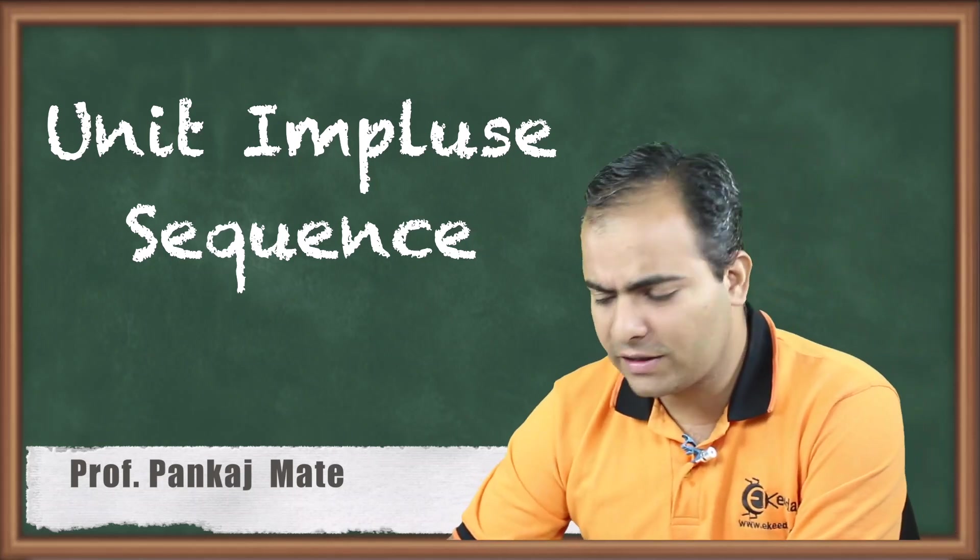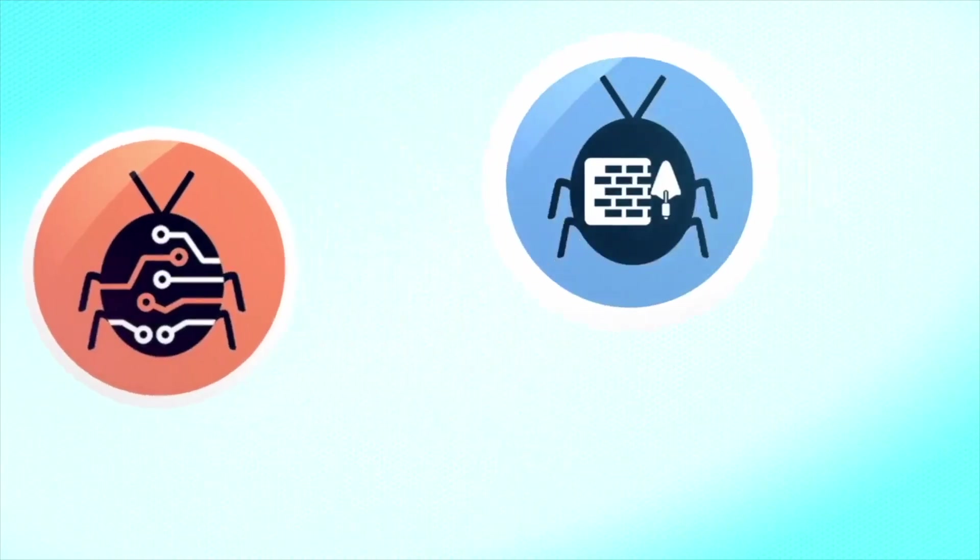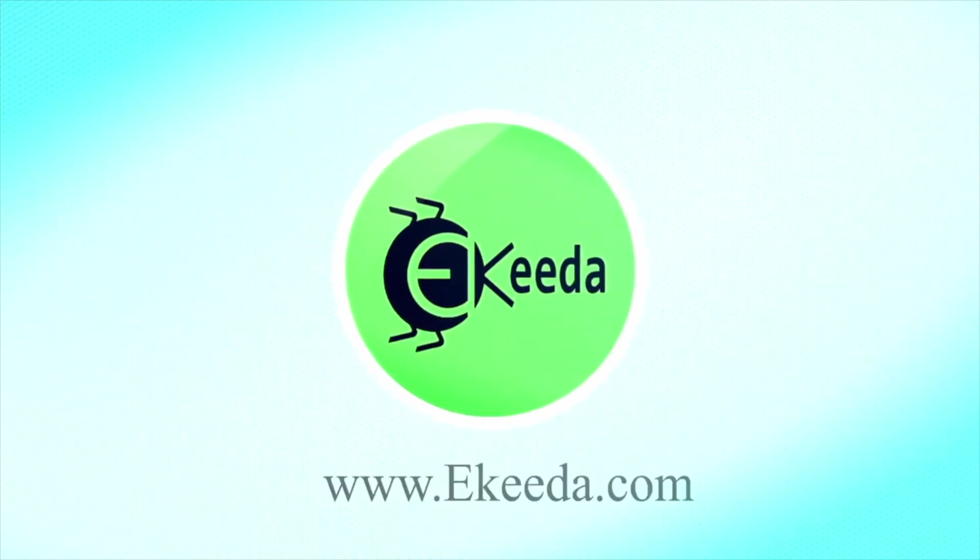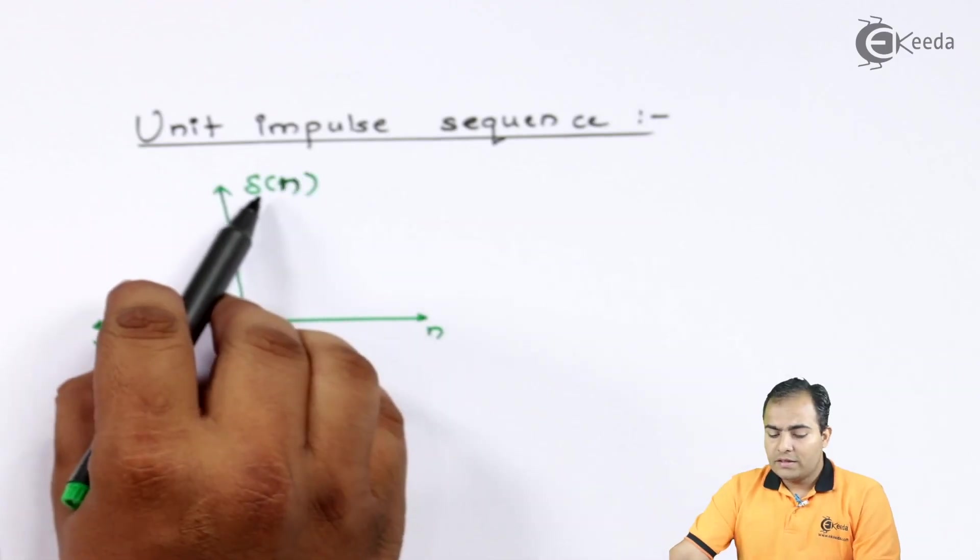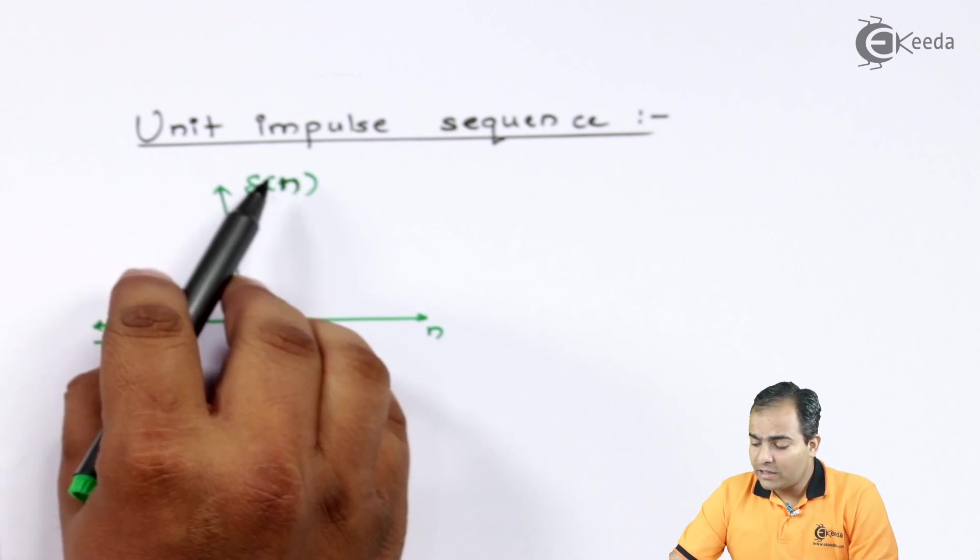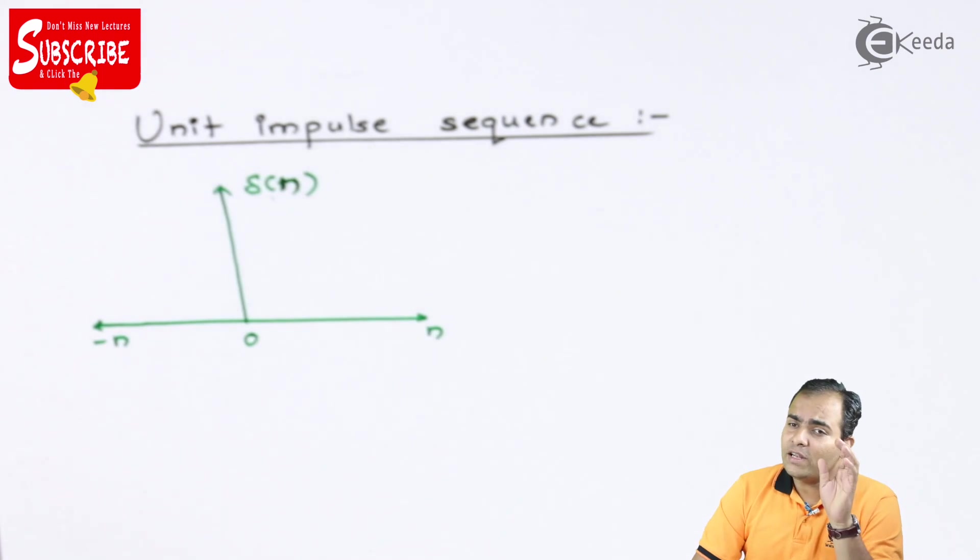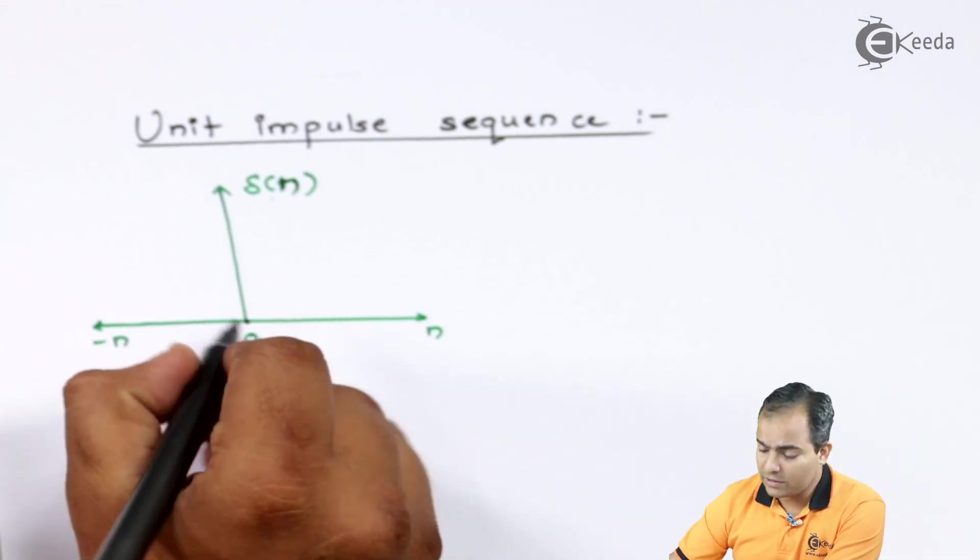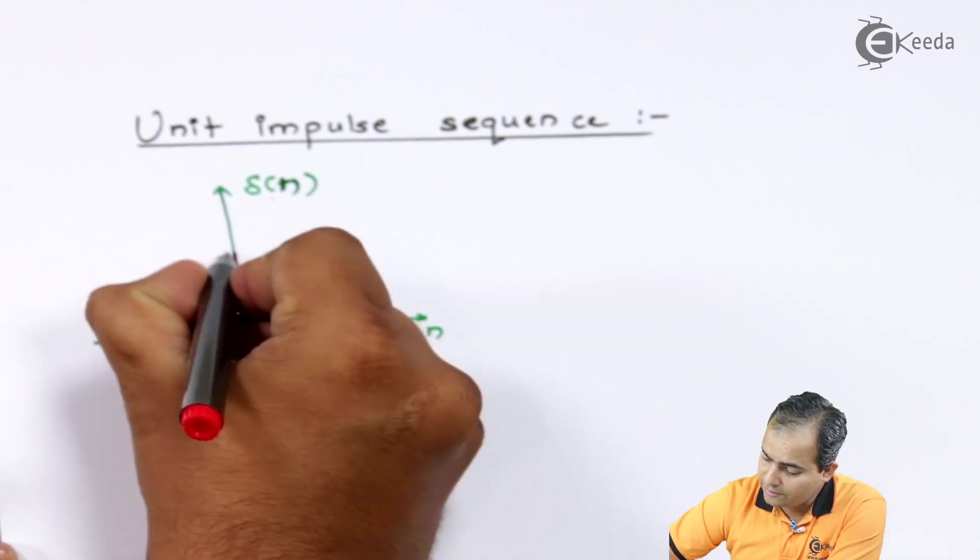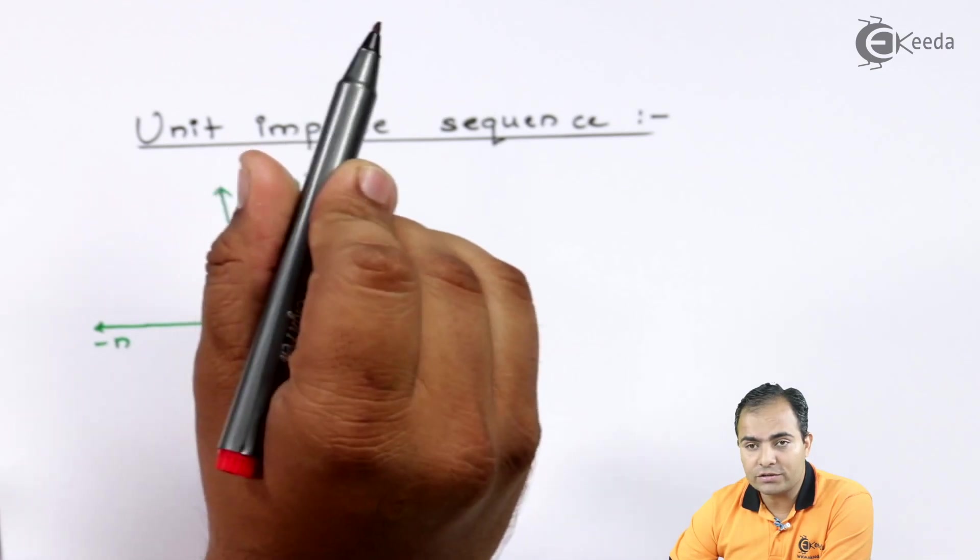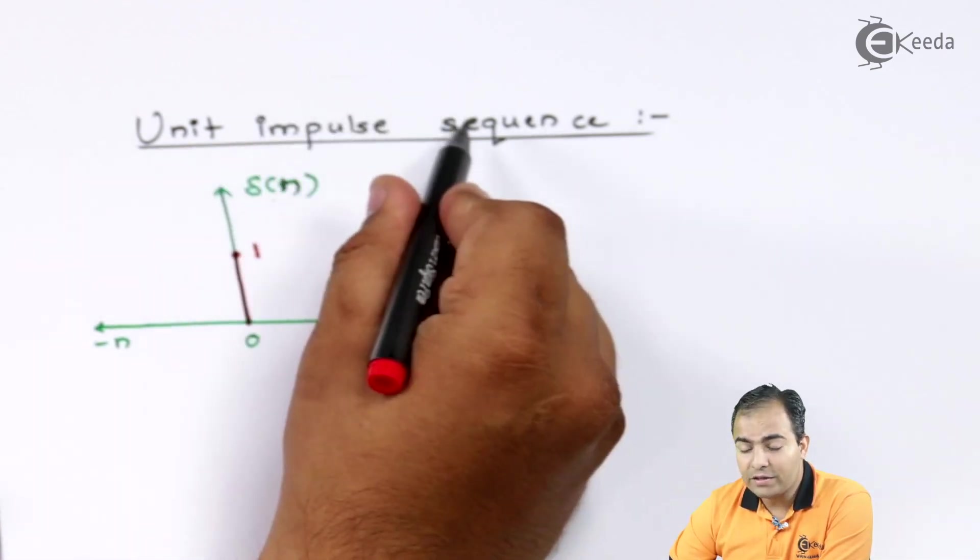Let's draw the graph first and we'll study the equations after. This function is represented by δ(n) and this function is only available at n equals to 0. So at n equals to 0, this function is having amplitude 1. Then you can say that this function is unit impulse function.